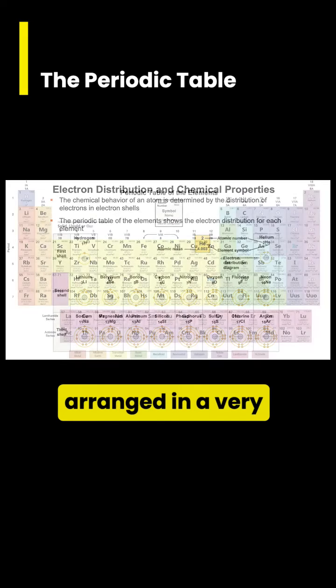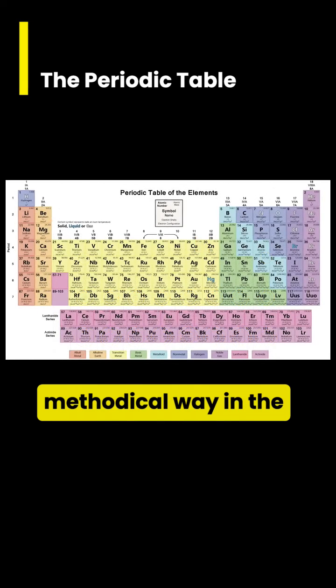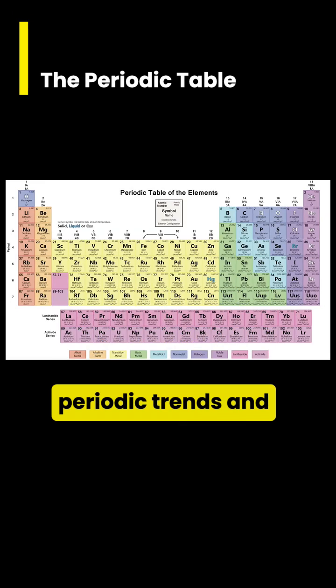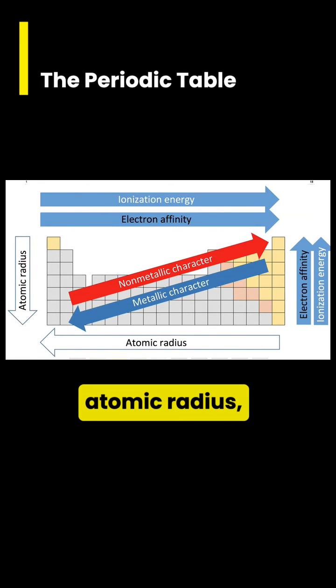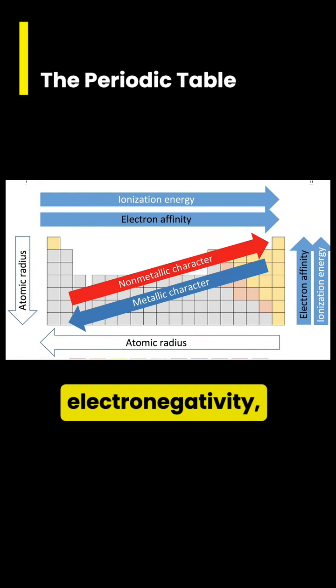As I mentioned, the elements are arranged in a very methodical way in the table, and there are distinct periodic trends and patterns that emerge in atomic radius, ionization energy, electronegativity, and electron affinity.